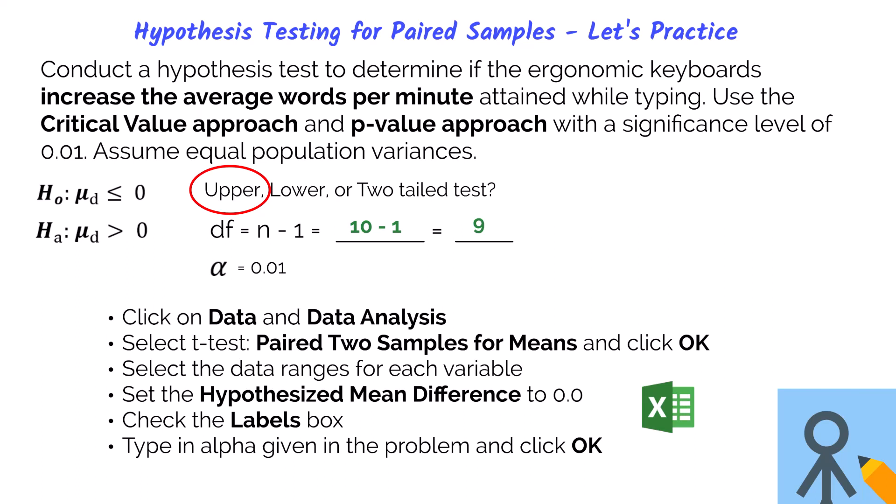Here are the steps to run the t-test for paired two samples for means. The hypothesized mean difference will be assumed to be zero but you can plug in zero as well. Always remember to check the labels box if you include the header row for your sample data. Otherwise, you will get an error. Finally, type in your alpha given in the problem and click OK.